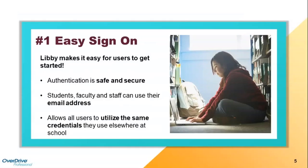Number one: Easy Sign-On. Libby makes it very easy for users to get started. We have several different types of authentication available once you become an OverDrive partner — single sign-on, federated authentication, EZproxy (which many college partners use), direct ILS, and APIs integrated into your catalog. Through our Library Card Manager portal, you input cards using student IDs, library IDs, or email addresses. Students using single sign-on or EZproxy can utilize the same credentials they use elsewhere at your school, making it familiar when signing into Libby or in the browser.